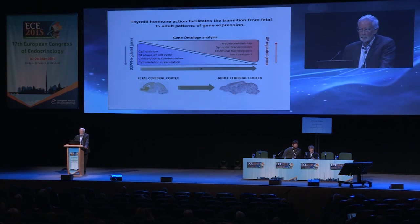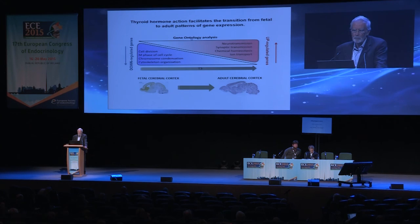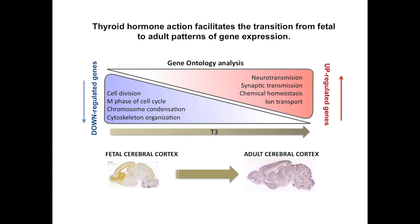What does this mean? This means that thyroid hormone facilitates the transition from the fetal to adult patterns of gene expression. A gene ontology analysis of these genes shows that the down-regulated genes are mainly concerned with cell division, cell cycle, and chromosome condensation, while the up-regulated genes are concerned with neurotransmission, synaptic transmission, chemical homeostasis, and ion transport.